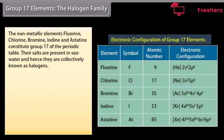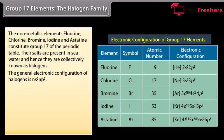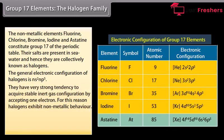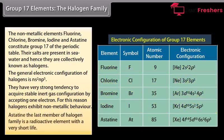The non-metallic elements fluorine, chlorine, bromine, iodine and astatine constitute group 17 of the periodic table. Their salts are present in seawater, and hence they are collectively known as halogens. The general electronic configuration of halogens is NS2NP5. They have a very strong tendency to acquire stable inert gas configuration by accepting one electron. For this reason, halogens exhibit non-metallic behavior. Astatine, the last member of the halogen family, is a radioactive element with a very short life.